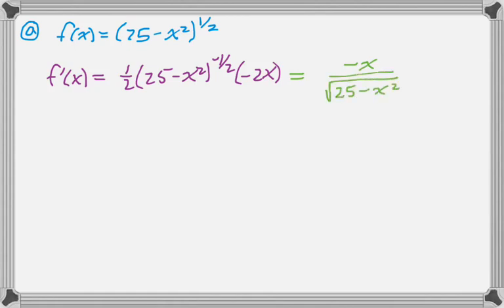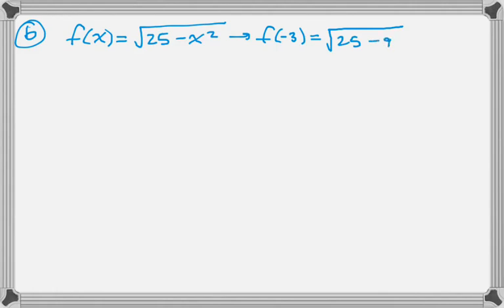Alright, so that was literally part A of this question. Part B is asking us to write the equation of a tangent line to f(x) at negative 3. So we need to know f(-3), which is radical 25 minus 9, so that's going to be radical 16 or 4, and we need to know f'(-3), which I'm just copying from the previous section.